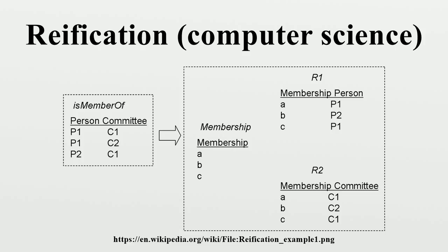Using the reification vocabulary, a reification of the statement about a person's membership would be given by assigning the statement a URI such as CommitteeMembership12345, so that describing statements can be written as follows: CommitteeMembership12345_stat rdf:type rdf:Statement; CommitteeMembership12345_stat rdf:subject Person P1; CommitteeMembership12345_stat rdf:predicate committee:asMemberOf; CommitteeMembership12345_stat rdf:object Committee C1.